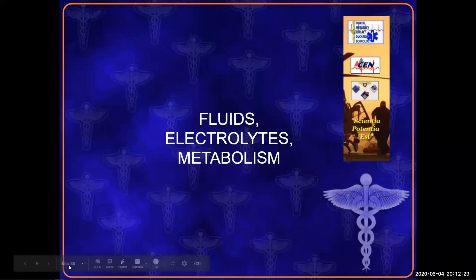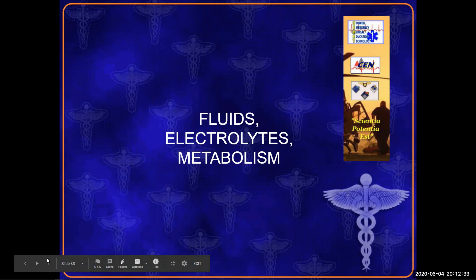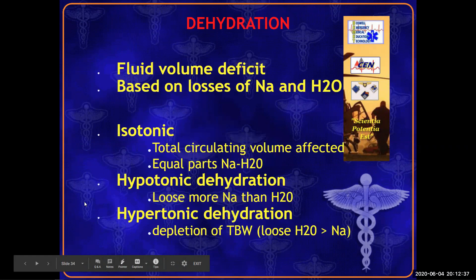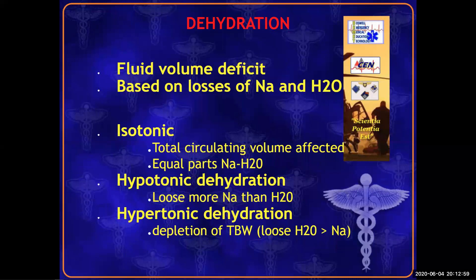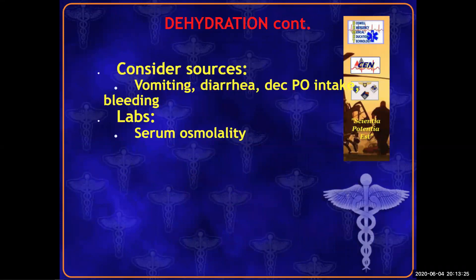Moving into fluids and electrolytes: we describe fluid loss based on the concentration of salt — sodium is the main determinant of fluid balance. Isotonic means equal parts sodium and water; hypotonic means less sodium relative to water; hypertonic means more. Treatment for dehydration involves replacing the fluid loss and shutting down the source — antiemetics for vomiting, antidiarrheals for diarrhea, blood products for blood loss. To assess fluid status, add a serum osmolality — you don't need to know specific numbers, just understand the concept.